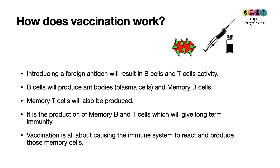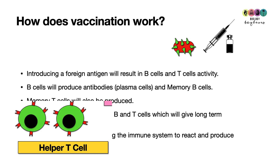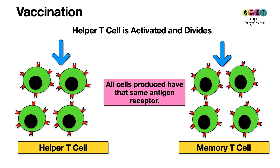Once the vaccine has been administered, the specific helper T cell becomes activated. It undergoes clonal selection and divides to produce more helper T cells, but it also produces memory T cells that will be able to recognize that antigen again in the future. One of the key roles of the helper T cells is that they stimulate the B cells and help them become fully activated.